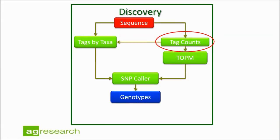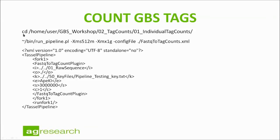The first step we will perform is tag counts. Here's our CD command — this has been set up to run with a bootable USB drive so the commands are tailored to that. We'll change directory into home/user/gbs_workshop. We're going to run this command calling a Perl file called run_pipeline, with memory requirements already coded in, and a config file — the fastq_to_tag_counts XML config file. I'm going to run it and then come back and explain what each of the bits inside the XML file are.